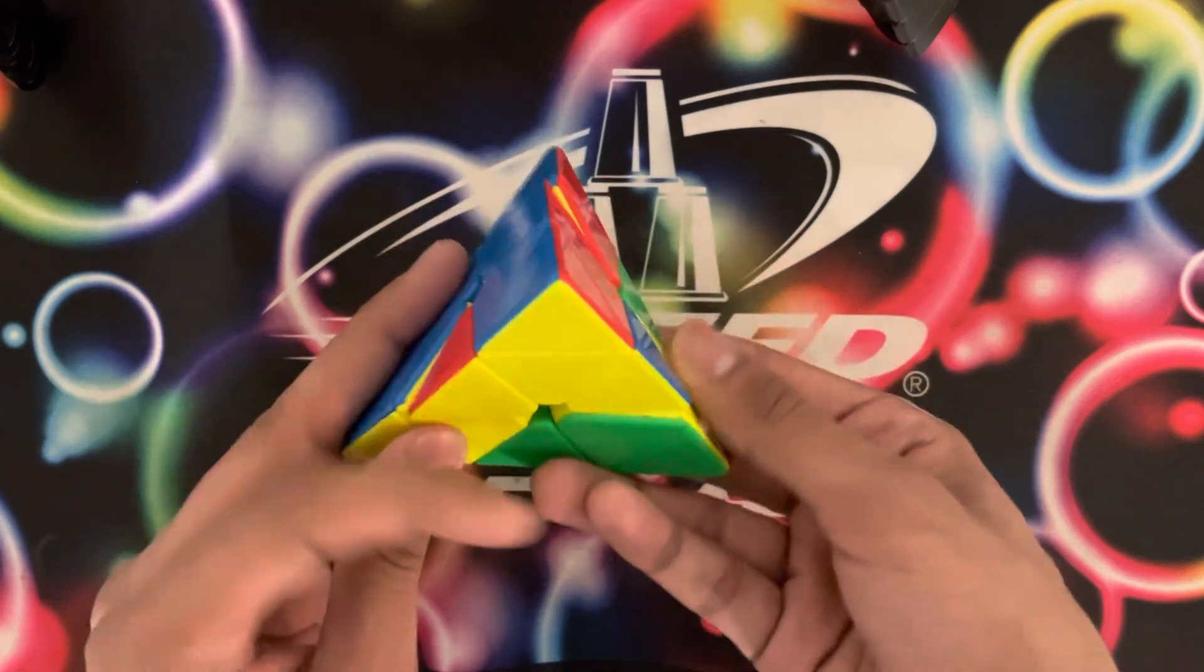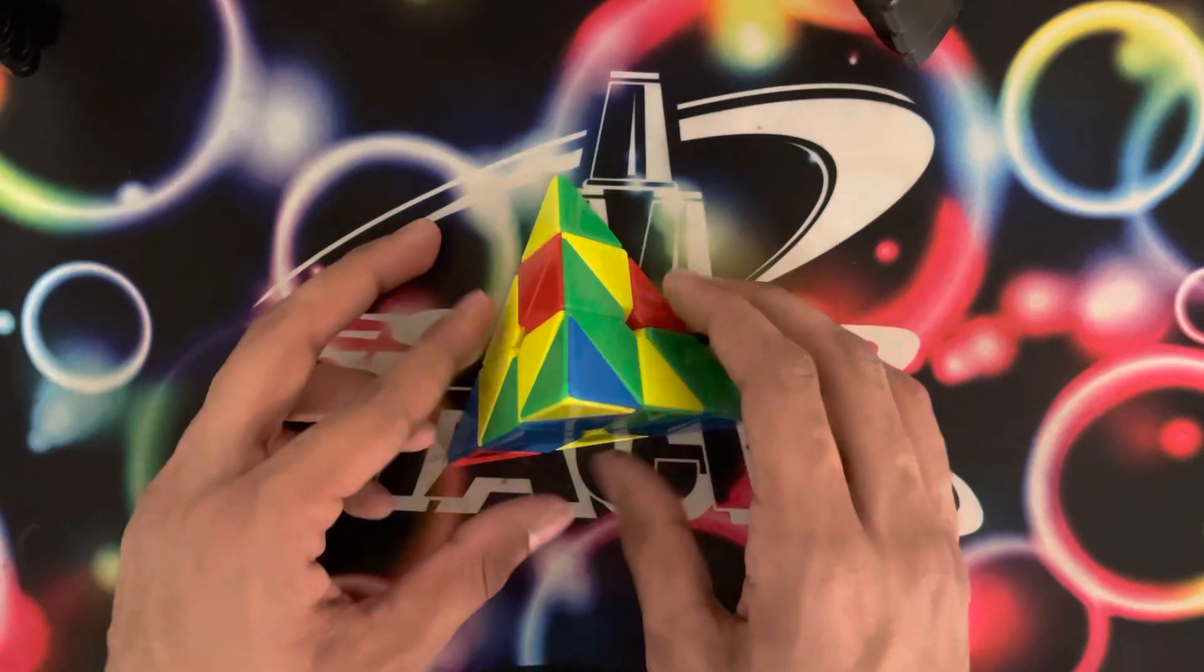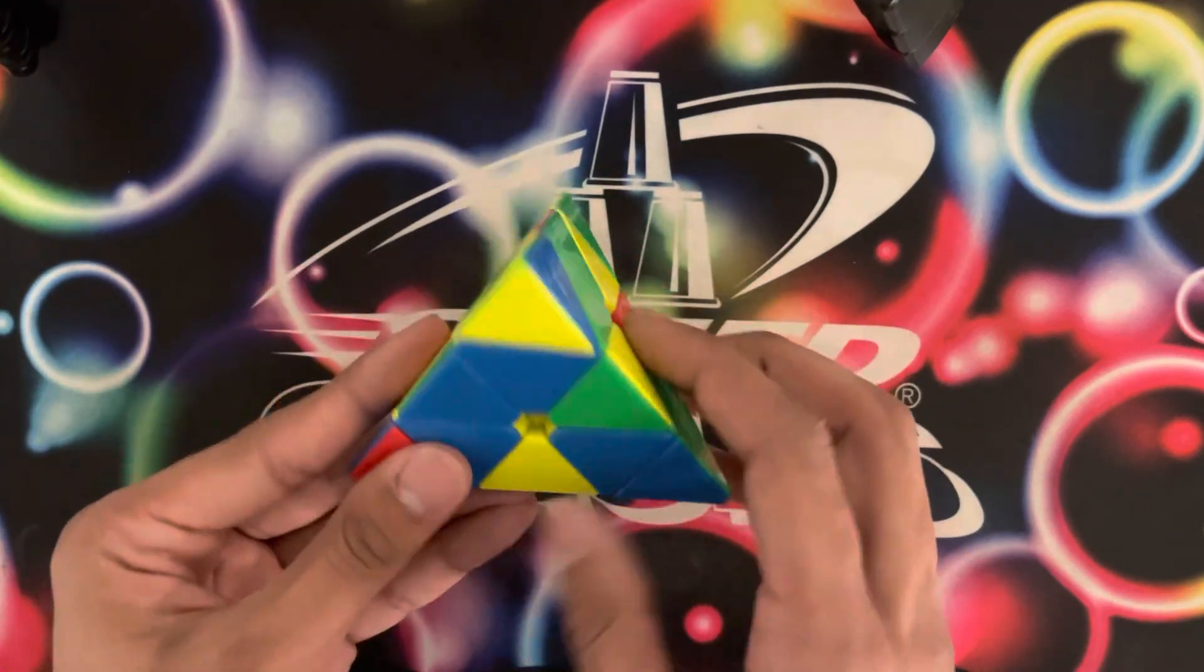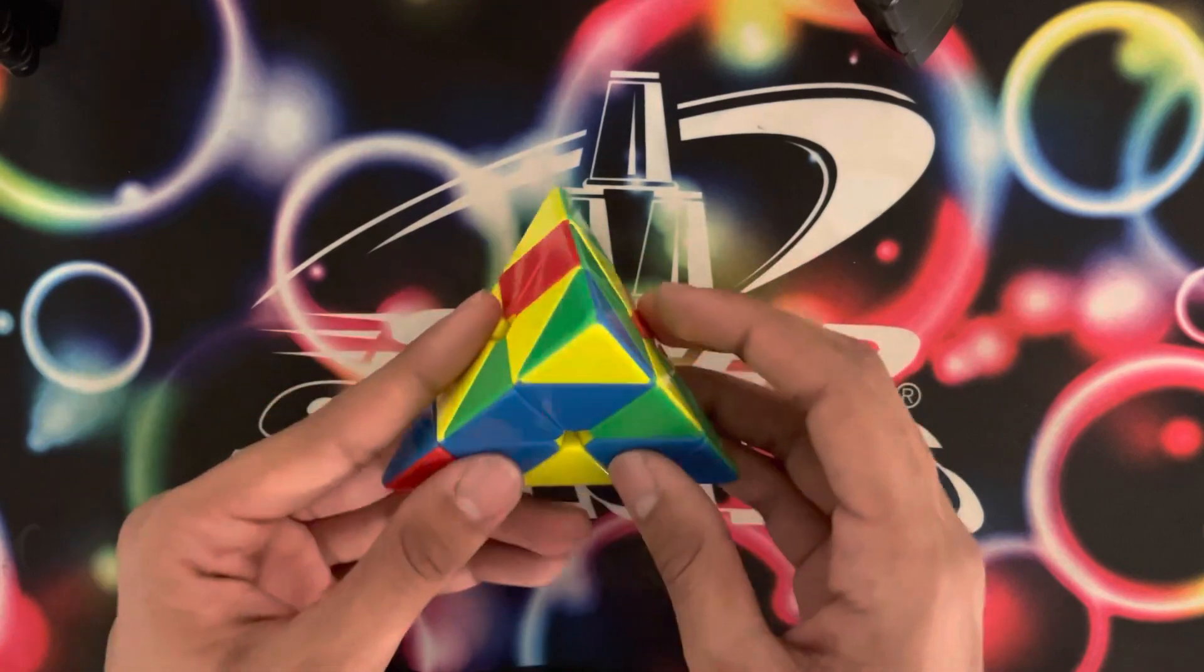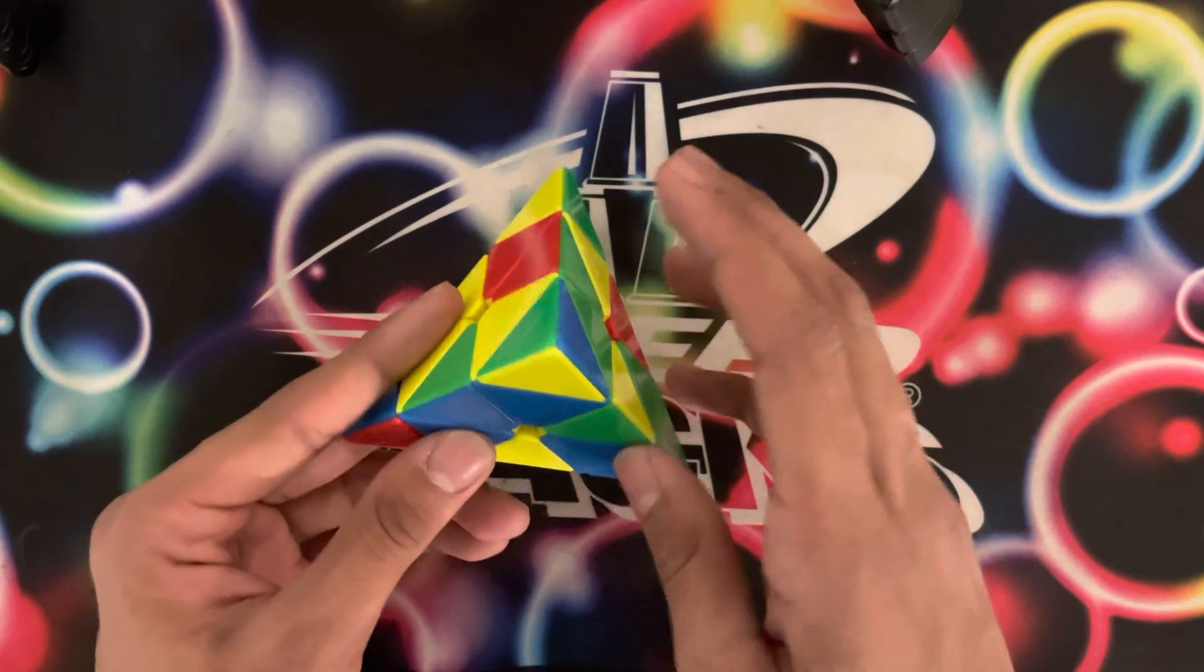So then I had to do the R. And on the last scramble, I saw that I could do a sledge and get a nice L4E case on blue, but I didn't think that solution would be that finger tricky.